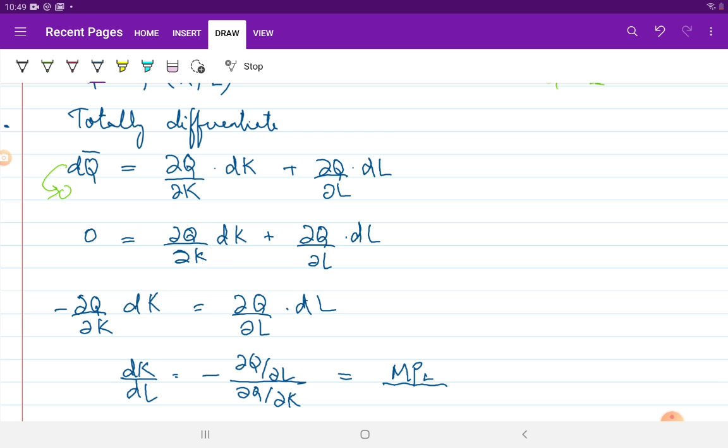Similarly, ∂Q/∂K tells you by how much does output change for a small change in the units of capital keeping all other things constant. In economics, this is the marginal product of capital.